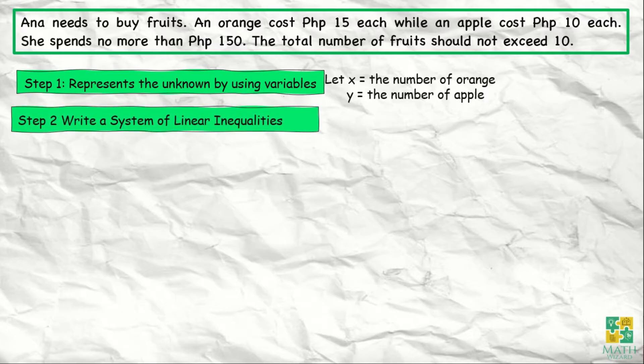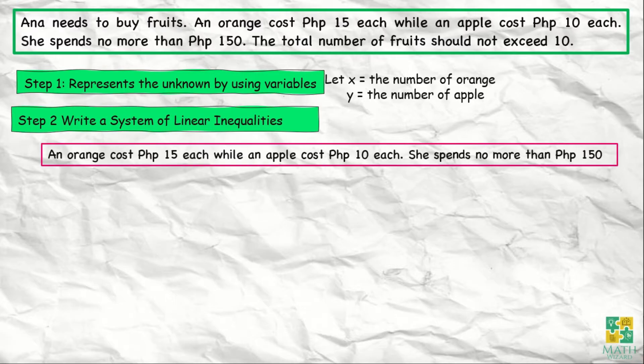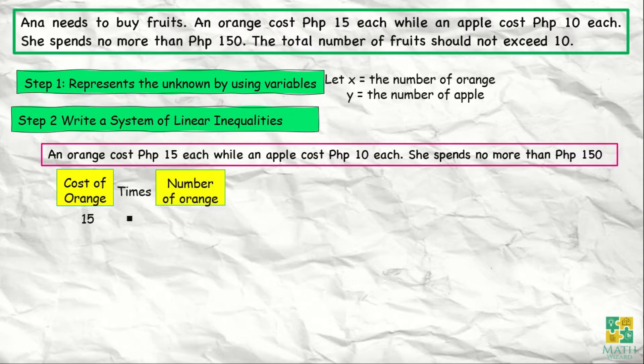The next step is we need to write a system of linear inequalities. Based on our problem, an orange costs 15 pesos each while an apple costs 10 pesos each, and she spends no more than 150 pesos. So the cost of orange will be 15 pesos multiplied to the number of oranges, which is x.